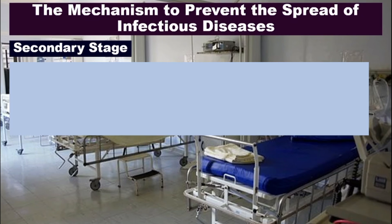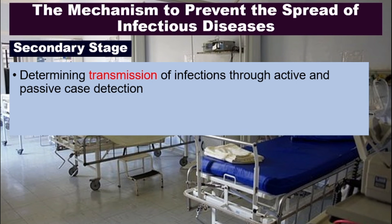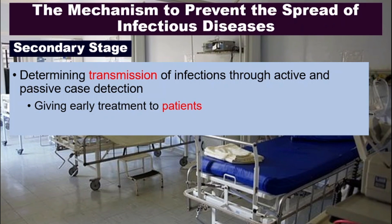The secondary stage focuses on the patient — those already sick with infectious diseases. We need to determine the transmission of infections through active and passive case detection. This is what is happening with COVID-19 — detecting new clusters, tracking close contacts, and getting them quarantined. This stage also involves giving early treatment to patients and separating them from others so that they don't further spread the disease.